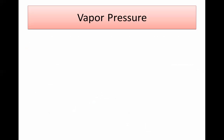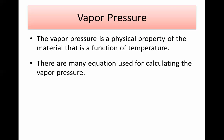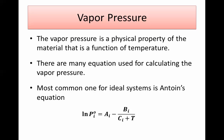Vapor pressure is a physical property of a material that varies with temperature. There are many equations used to calculate it, some for ideal and some for non-ideal systems. One of the most common is the Antoine equation: log(P*_i) = A − B / (C + T), where A, B, and C are constants for each component and T is temperature in Kelvin. This gives you the vapor pressure, typically in millimeters of mercury.